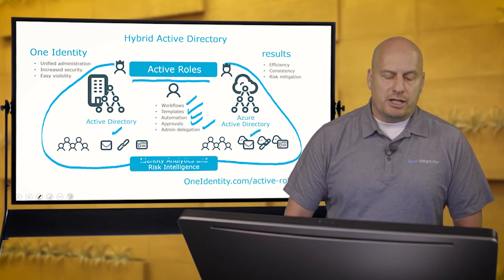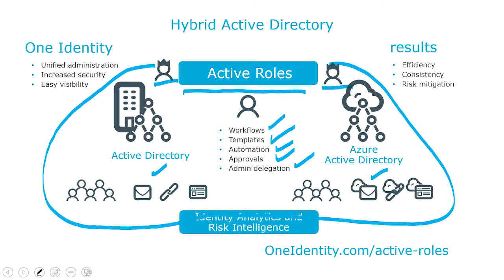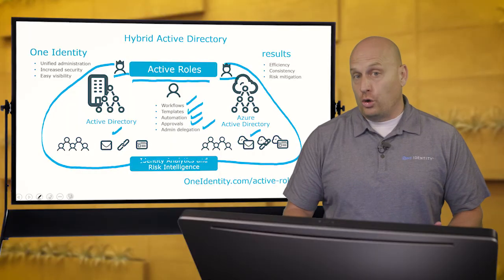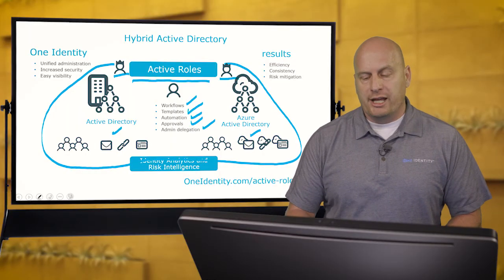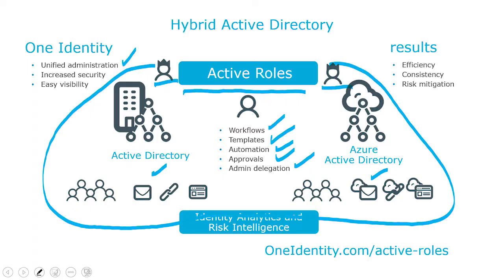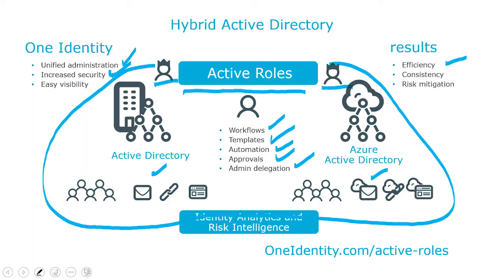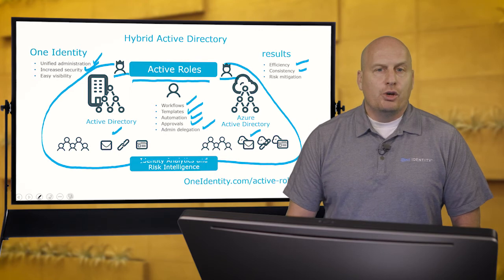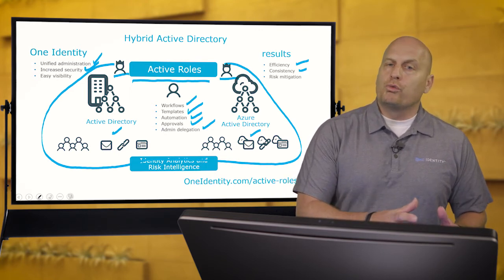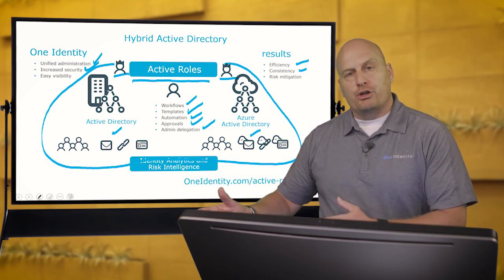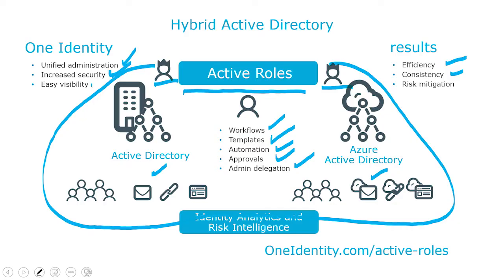And it includes the administrative delegation we talked about, where administrators are only given enough permissions that they need to do their jobs — not the all-or-nothing that natively comes in both Active Directory and Azure Active Directory. So you have this unified administration, a single tool that does all of these things for management and security of both the on-prem and cloud Active Directory environments, which increases your efficiency dramatically and increases security because now you have only the correct permissions. That also increases consistency — when you do things in Active Directory now, you don't run the risk of syncing an error out into the cloud with Azure Active Directory, which you have with native tools.